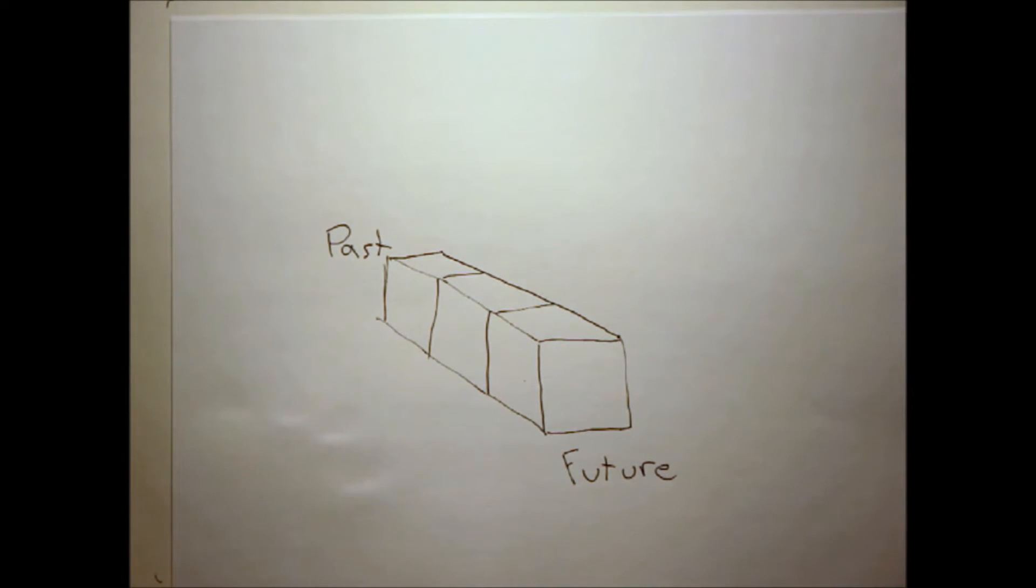For us, the fourth dimension is time. It's basically 3D shapes repeated in a line. One end in the past, and one in the future. If something could willingly move through the fourth dimension, it could move through time as well as the other three dimensions. Of course, we can also move through time, but just in one direction.